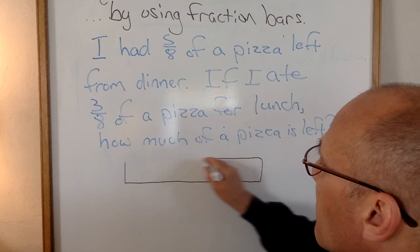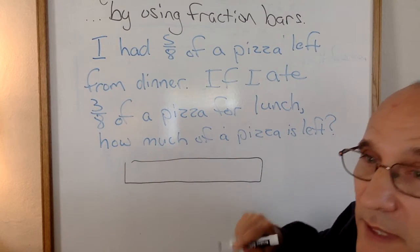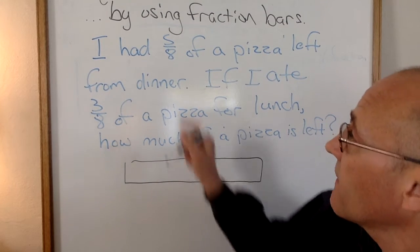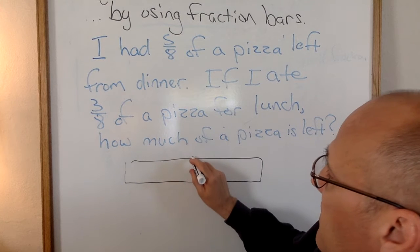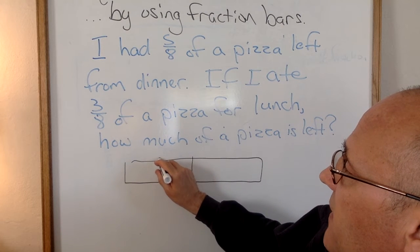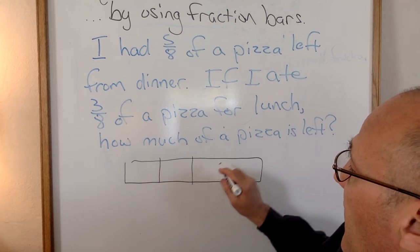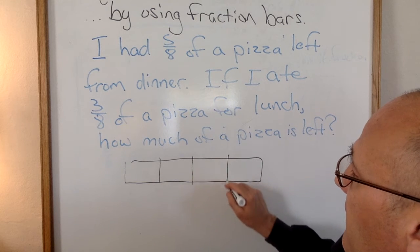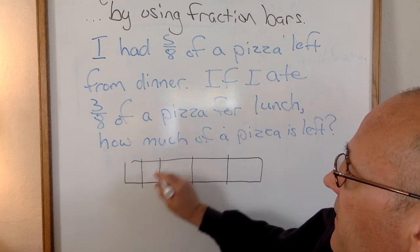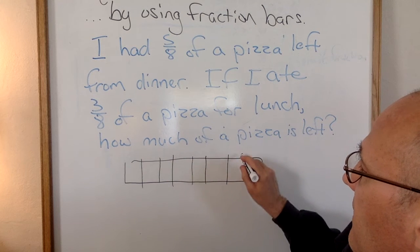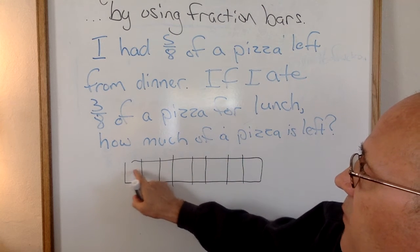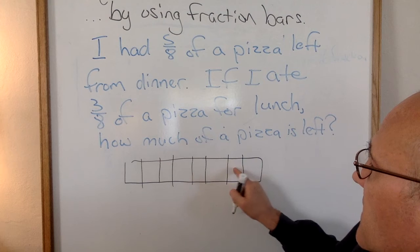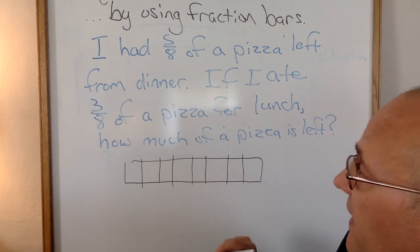So let's use our fraction bars to show this problem. A fraction bar is representing 1 whole pizza. Alright, I had 5/8 of a pizza, so I'm going to partition it into 8 equal parts. Remember when we did our kit to make eighths we partition it in half, each of those in half, and each of those in half again. Now I have eighths. I like to count them 1, 2, 3, 4, 5, 6, 7, 8. Yep, 1 whole is made of 8 eighths.